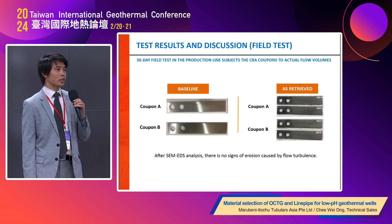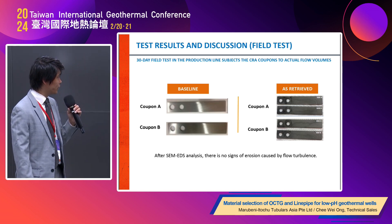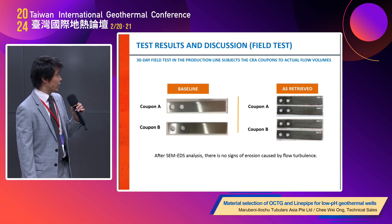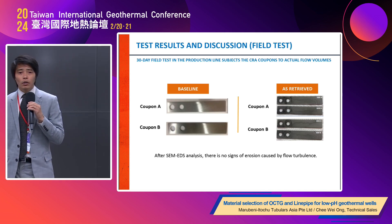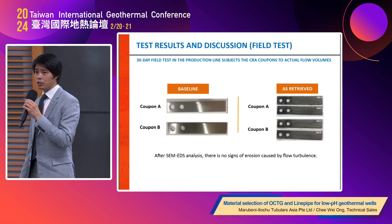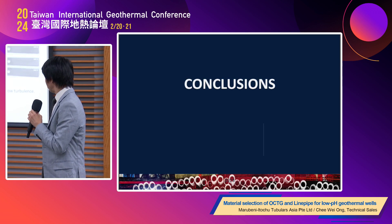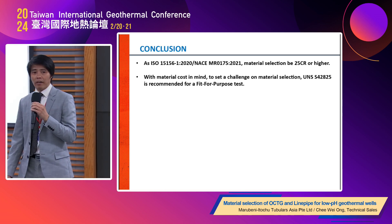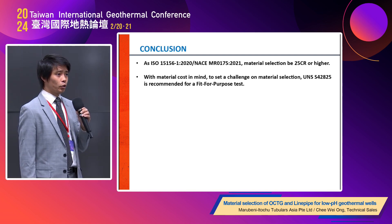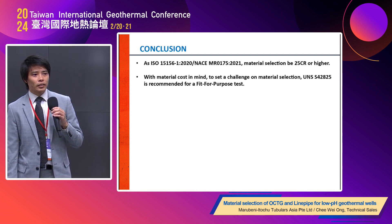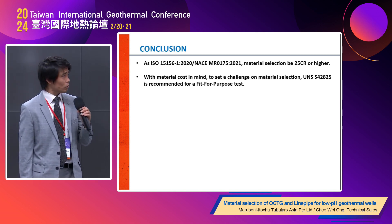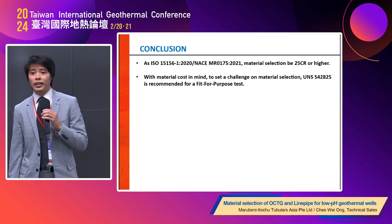In the field test, supporting the lab results, coupons were immersed for 30 days. The baseline shows material not yet placed in the production line, while the retrieved coupons showed no erosion due to flow turbulence. Conclusions: per ISO 15156, material selection points to 25-chrome. With material cost optimization in mind, UNS S42825 is also considered, and a fit-for-purpose test is needed to justify this recommendation.